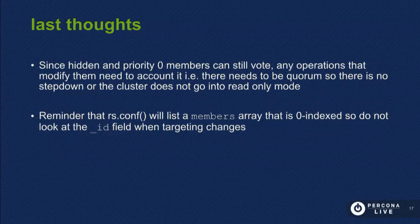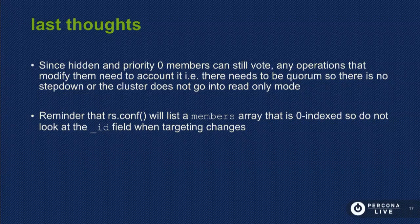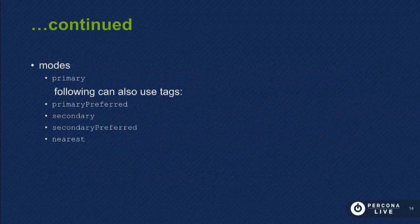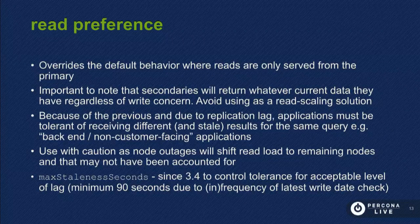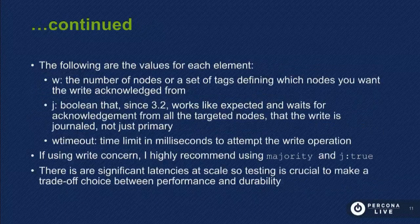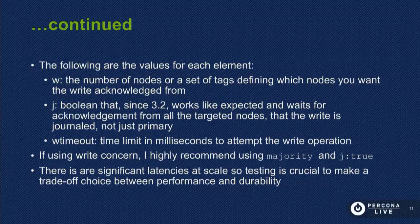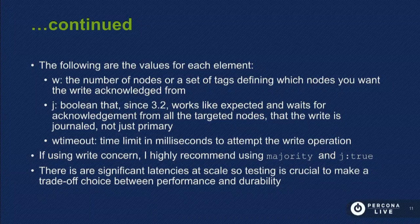A question about tags: if you put tags and say California nodes only, then fail over to D.C., your tag set still says California, but now you want all your writes to go to the primary in D.C. — you'd need to change the tags on failover. A lot of people just use something like primary preferred for that reason. Also, just a reminder: if you do have a restrictive write concern and your cluster can't fulfill it, your application could be blocked because it's not fulfilling that write concern.